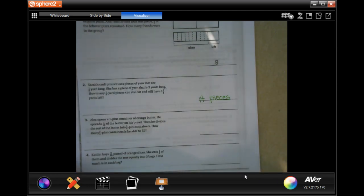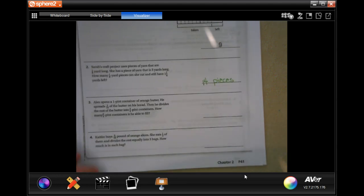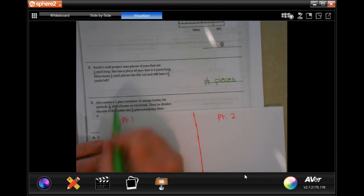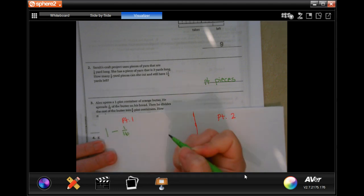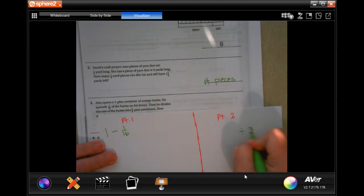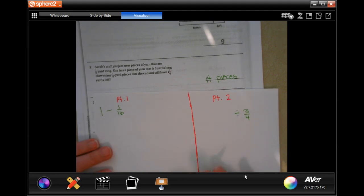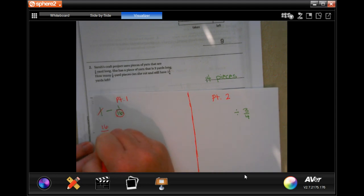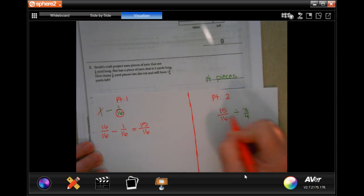Let's go on to number 3. Alex opens a one-pint container of orange butter. He spreads 1/16 of the butter on his bread. Then he divides the rest of the butter into ¾ pint containers. How many ¾ pint containers can he fill? He had 1, and he subtracted 1/16 of that, and then divided the rest into ¾ servings. Two parts to this again. I need to borrow it and make it into a fraction. My denominator here is 16, so I'm going to put 16 over 16, because that's equal to 1, minus 1 over 16. My denominator stays 16, and 16 minus 1 is 15.